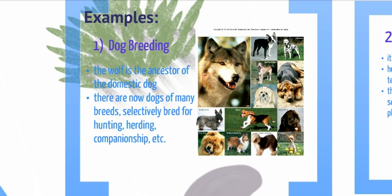Now on to examples of artificial selection. The first one is dog breeding. The wolf is the ancestor of the domestic dog, and dogs have been selectively bred for hunting, herding, companionship, and more. Now there are so many different breeds of dogs. However, dogs today are less fit than their ancestors for living in the wild, because the traits they were bred with weren't usually picked for survival.